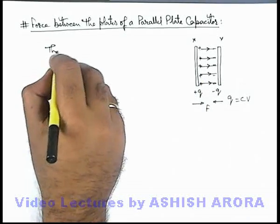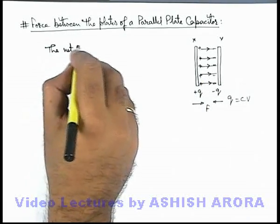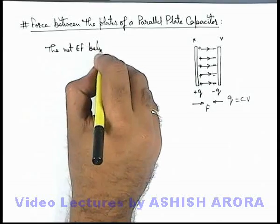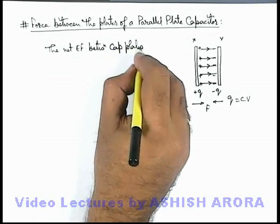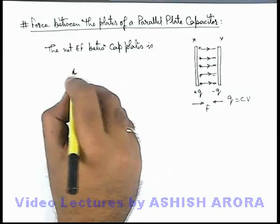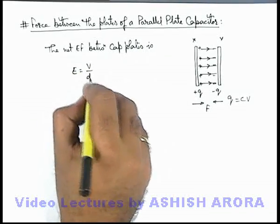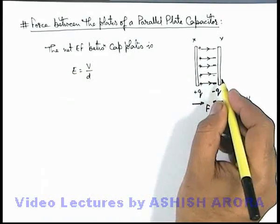We can directly write the net electric field between capacitor plates. This E can be written as V by d, if V is the potential difference across the plates.